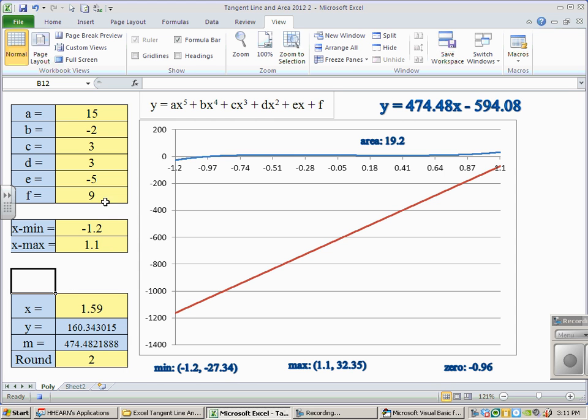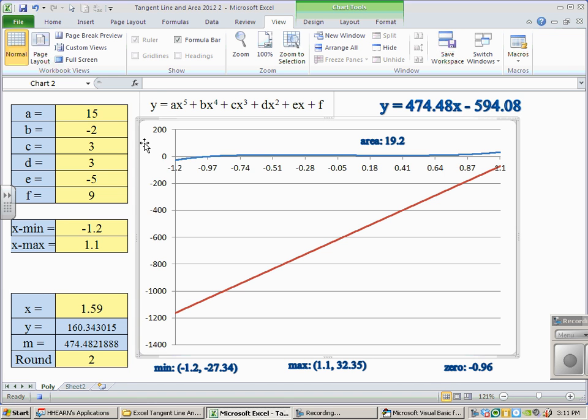All right. The first thing we need to do is make certain that as we're recording, we don't already have the chart selected. We need to record selecting the chart. So if you are on the chart, click some cell not on the chart.